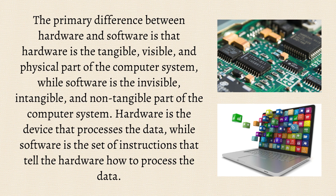The primary difference between hardware and software is that hardware is the tangible, visible, and physical part of the computer system, while software is the invisible, intangible, and non-tangible part. Hardware is the device that processes the data, while software is the set of instructions that tell the hardware how to process the data.